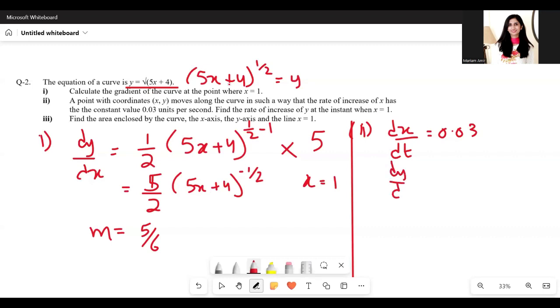We need dy/dt when x equals 1. At x equals 1, we just found that dy/dx equals 5/6. Now we can apply the chain rule.